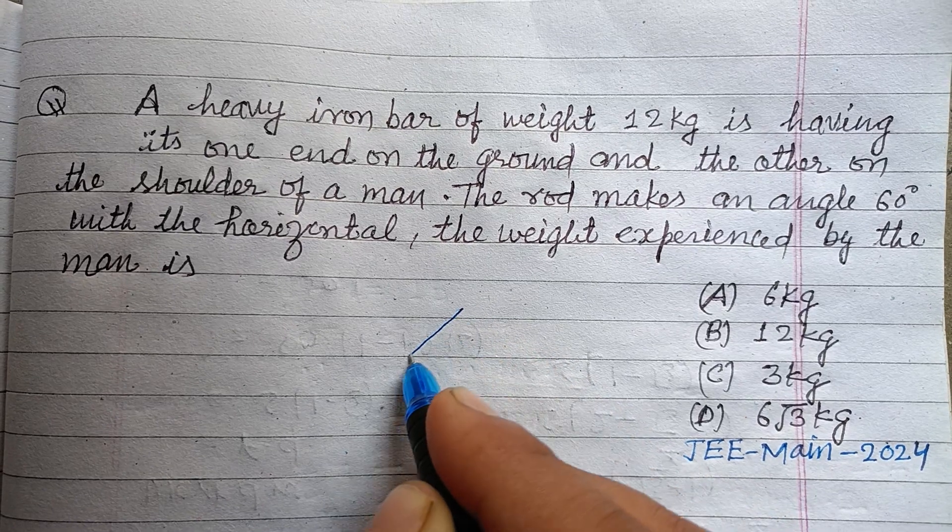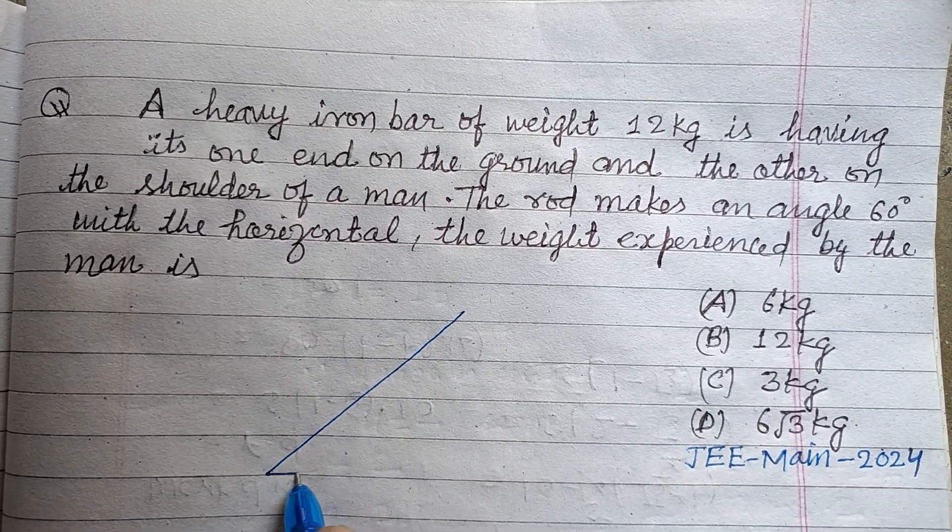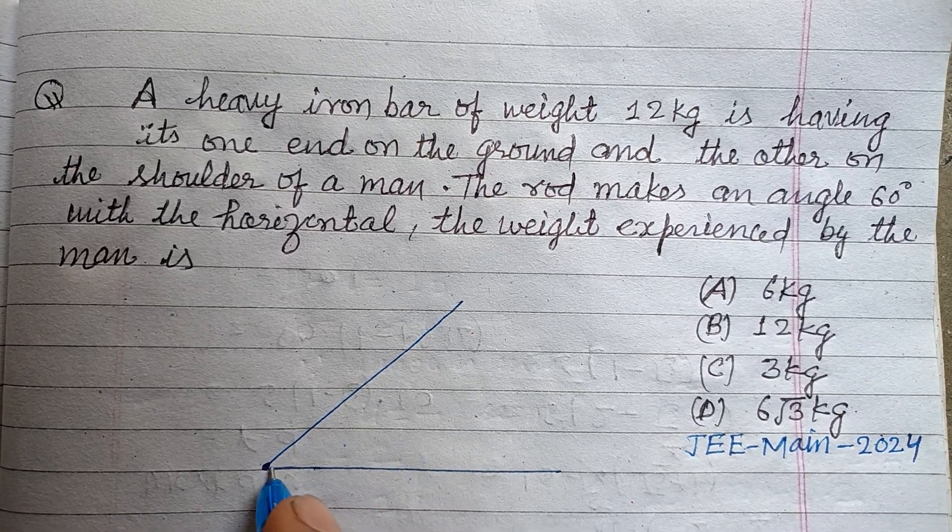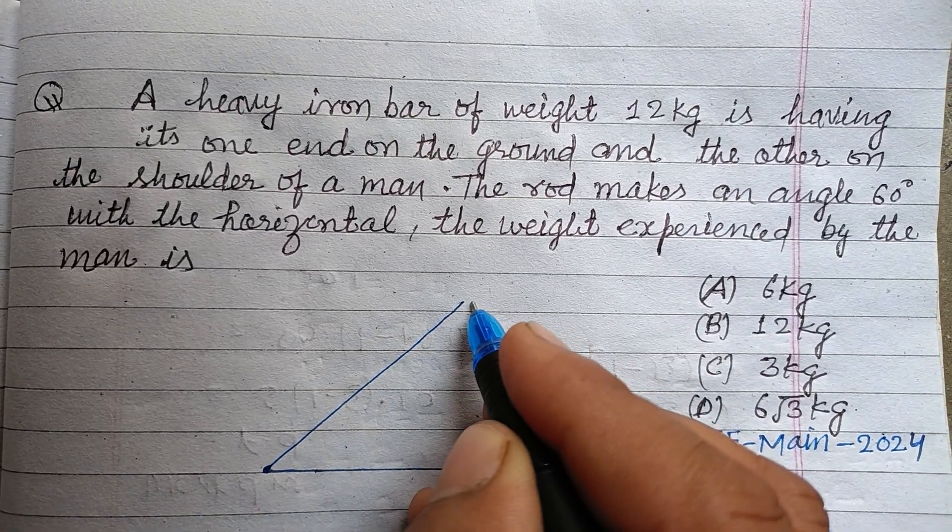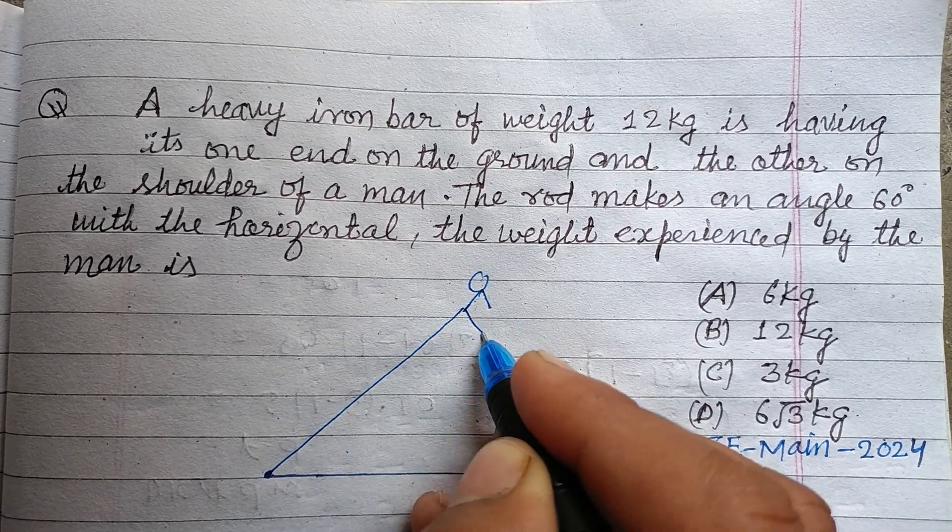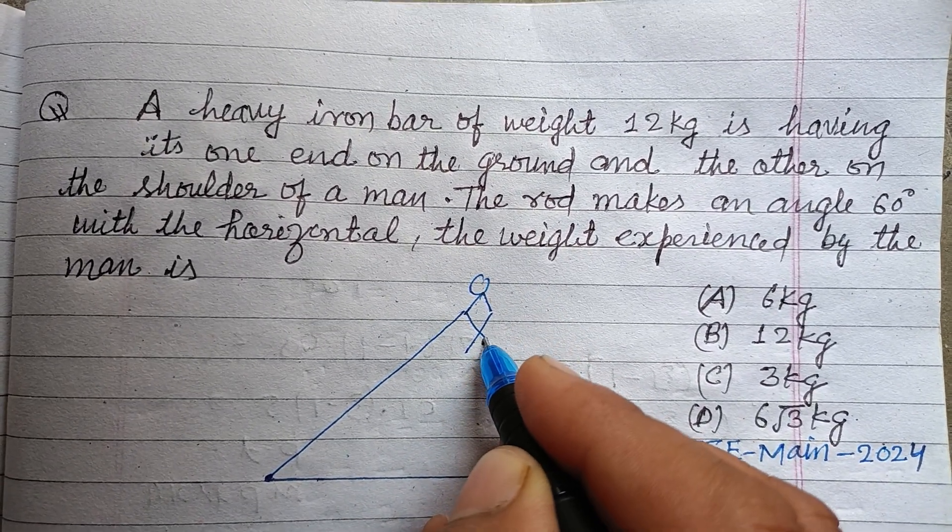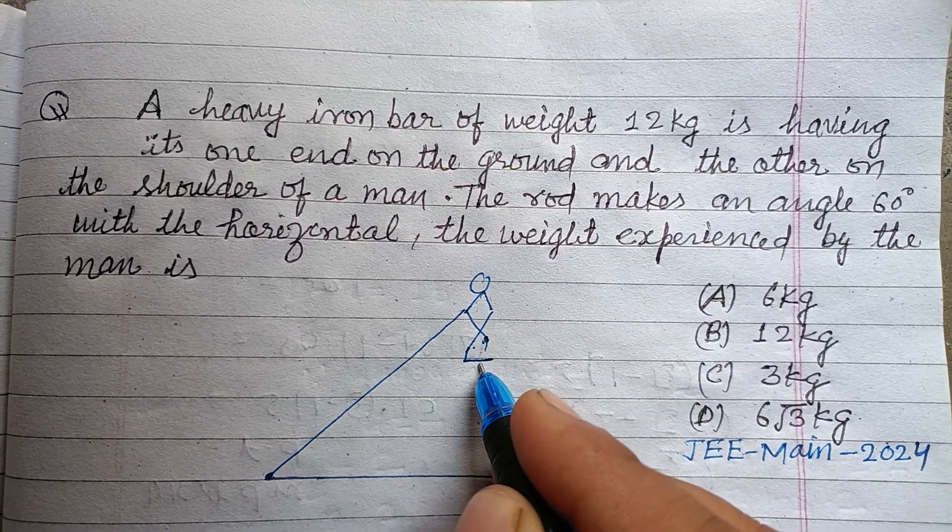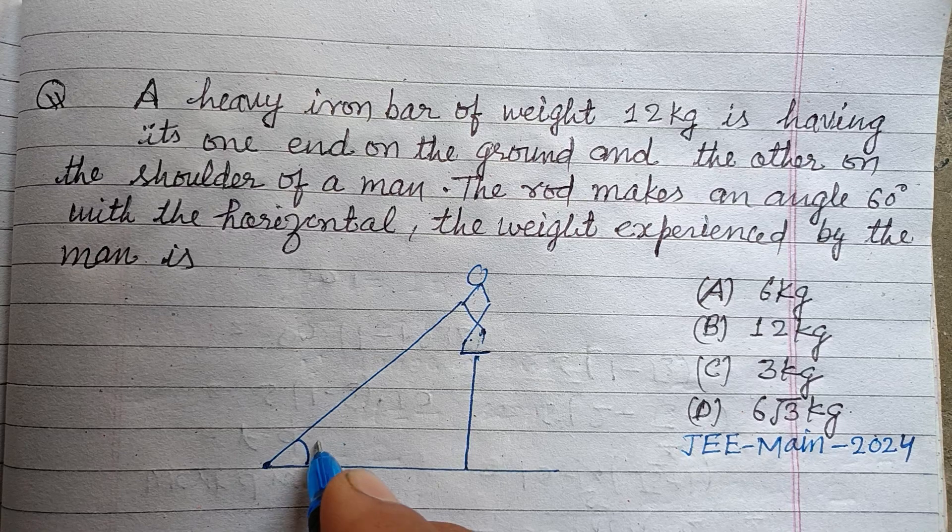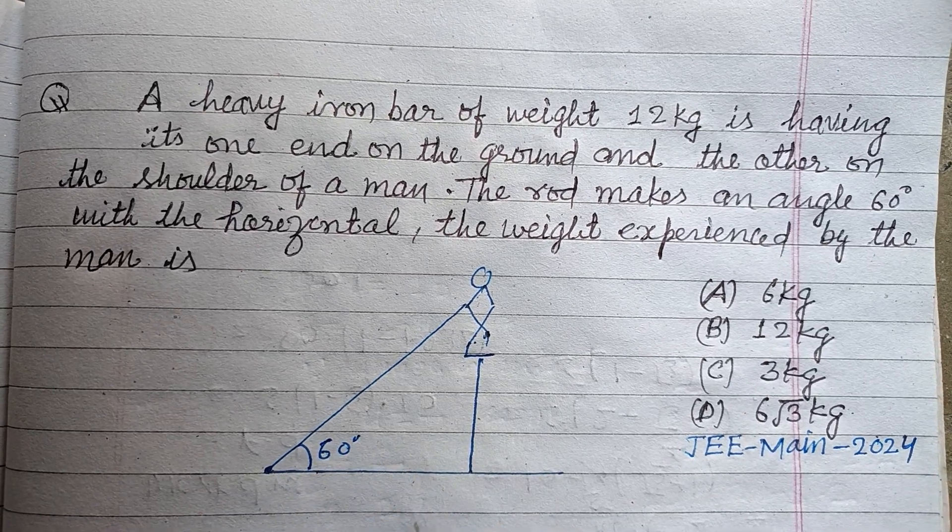So students, here is a rod whose one end is at the ground and another end is at the shoulder of a man. Okay, and this is making a 60 degree angle with horizontal.